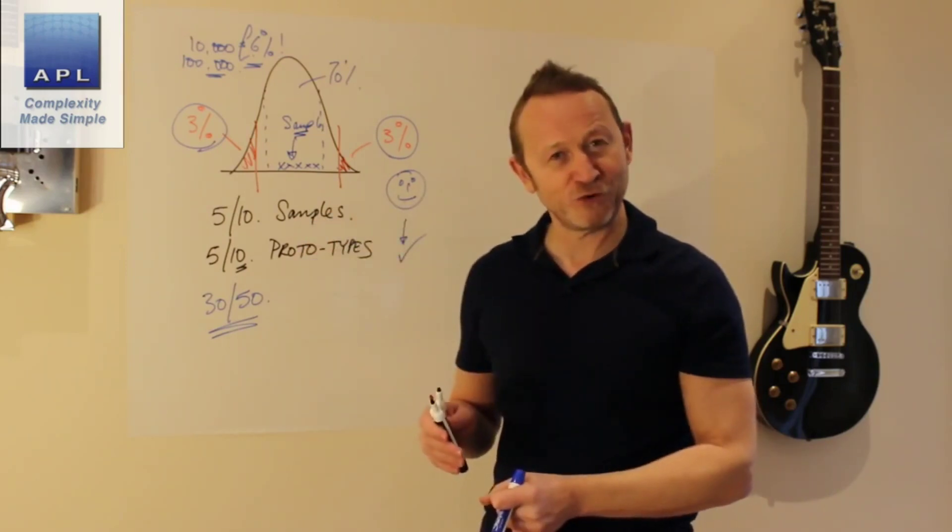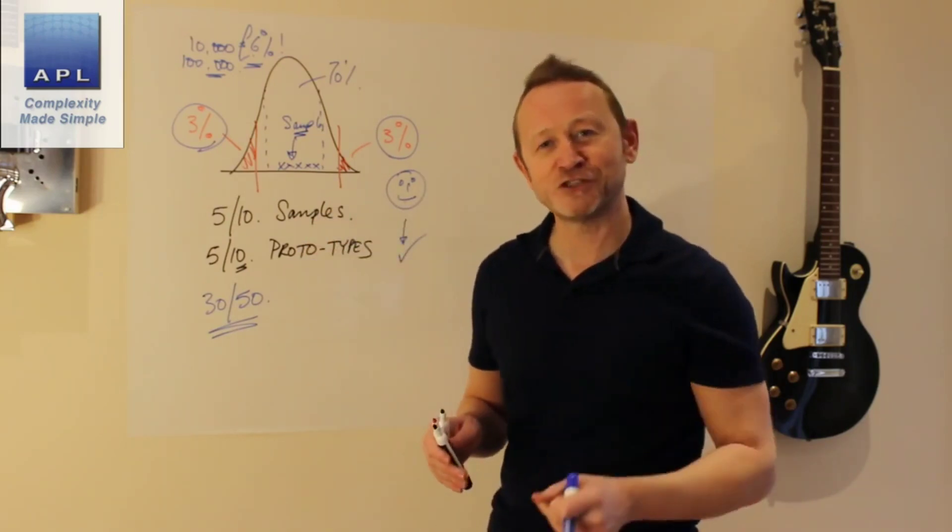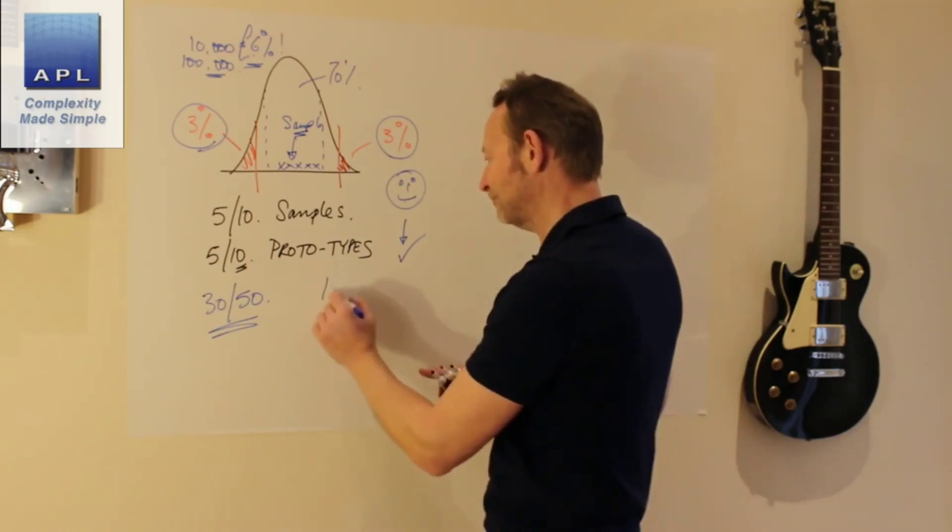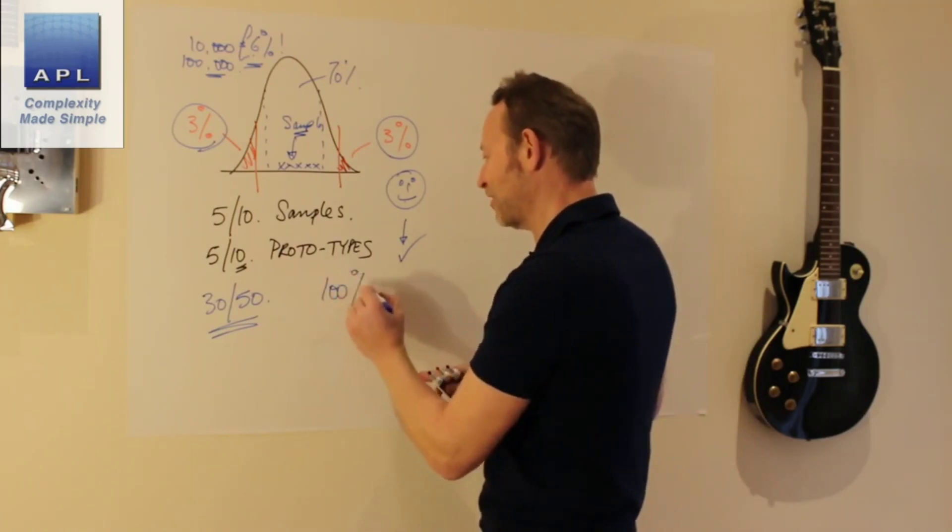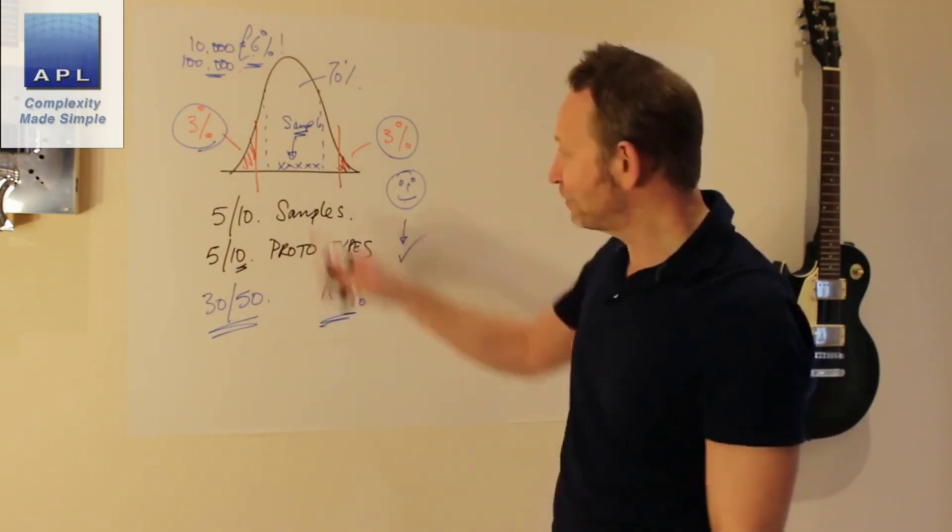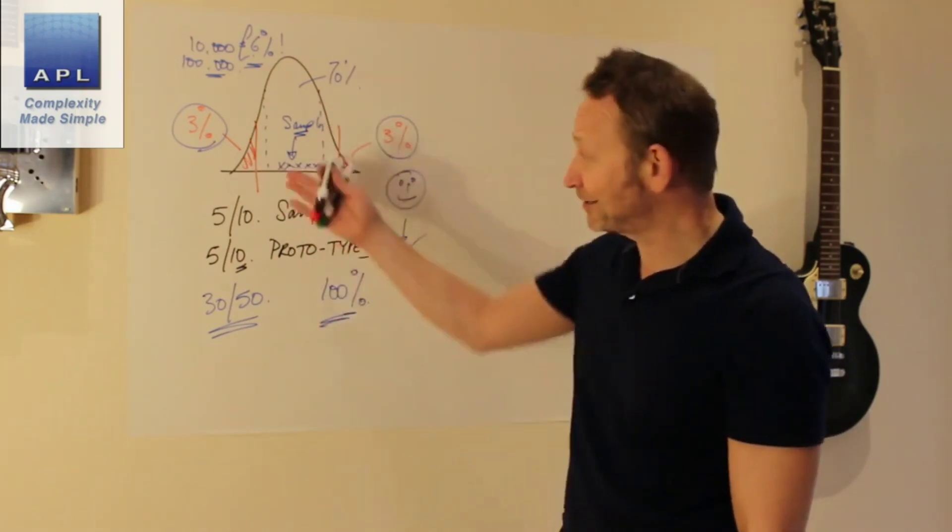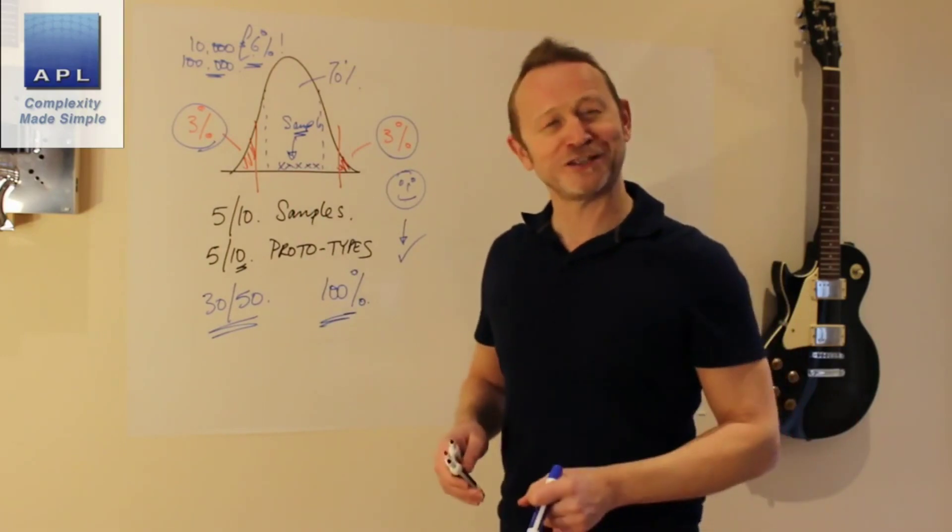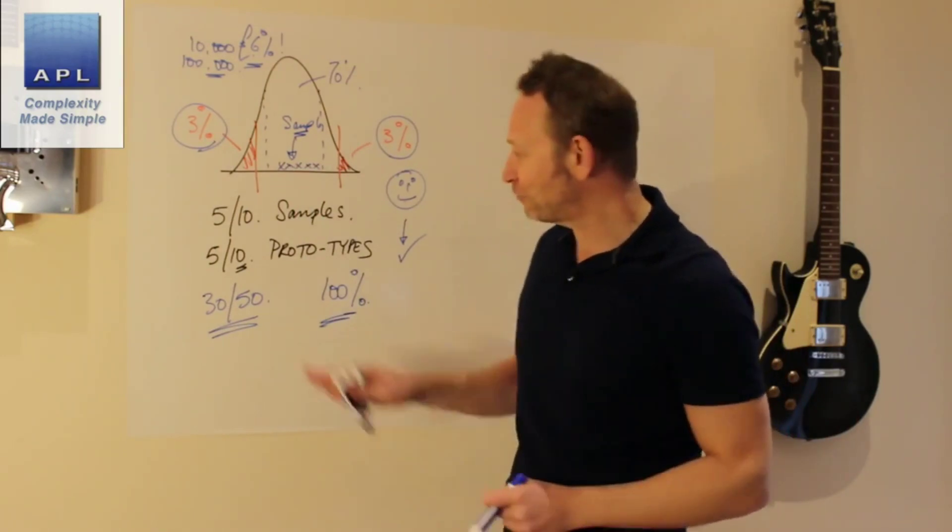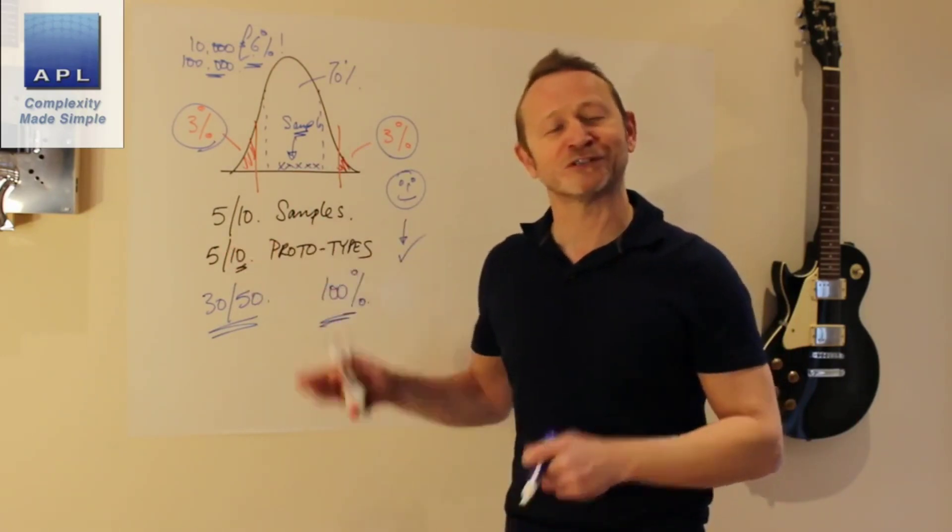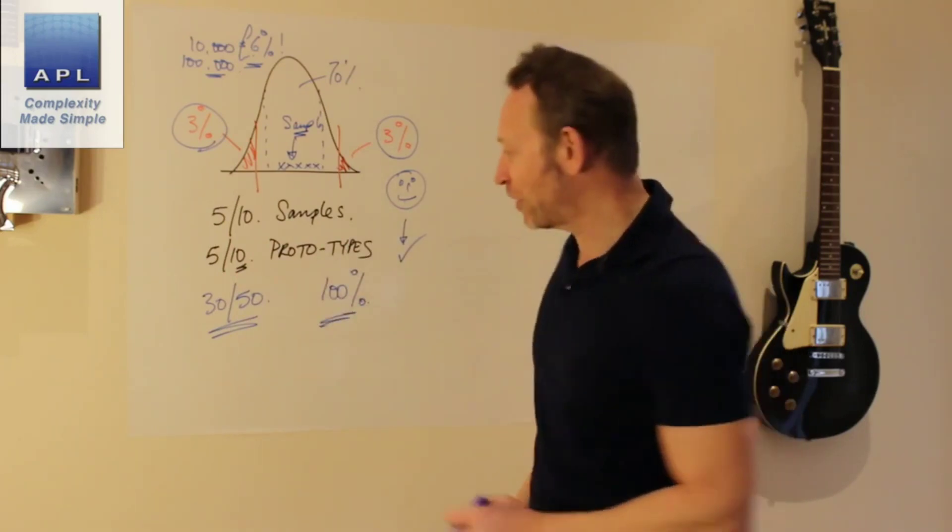Without checking all of that production. So what do you have to do now? Now you have to take a sample size which is a hundred percent, because you don't know where the six percent are going to sit in the ones that you're manufacturing.